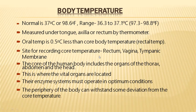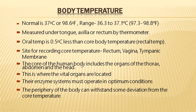Core body temperature can be exactly measured by placing the thermometer in the rectal region. Sites for recording core temperature include the rectum, vagina, and tympanic membrane. The core body temperature regions include the organs of the thorax, abdomen, and head. In the head we have the brain; in the abdomen, important organs like kidney and the digestive system; and in the thorax, we have the lungs and heart.